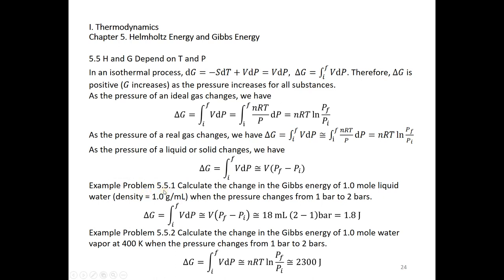Example 5.5.1: Calculate the change in Gibbs energy of 1.0 mol liquid water with a given density when pressure changes from 1 bar to 2 bars. The molar volume is easily calculated from molar density and molar mass as 18 mL/mol, so V = 18 mL. Multiplying by the pressure change (1 bar = 10⁵ Pa, 1 mL = 10⁻⁶ m³), the result is only 1.8 J, or 0.0018 kJ.